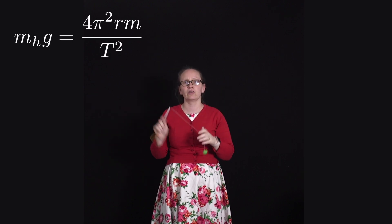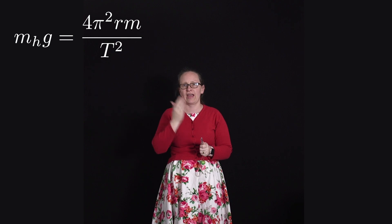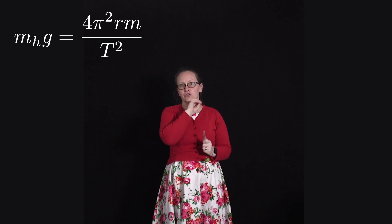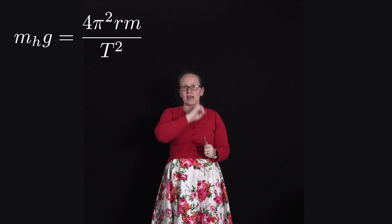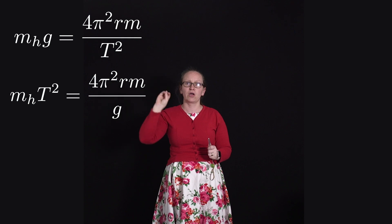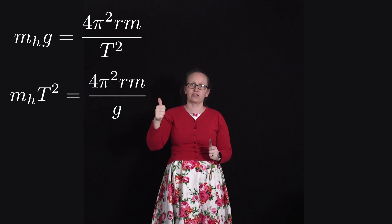So going back to our equation now, we can move the hanging mass and the period, which are our two variables, onto one side. So we have mh times the period squared is equal to 4π² rm on g, so we're not changing the radius.